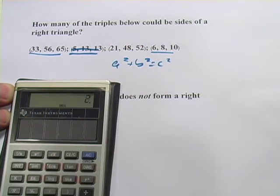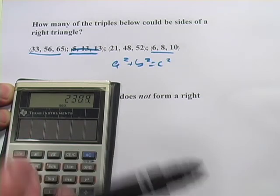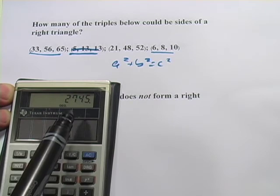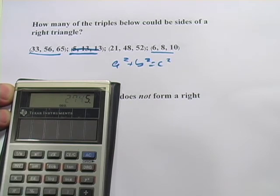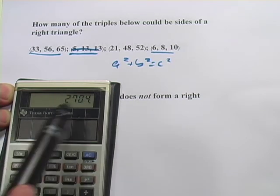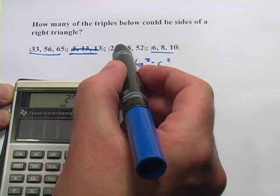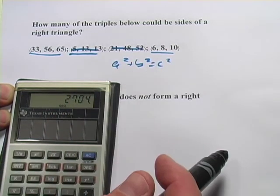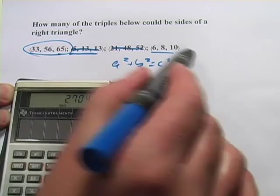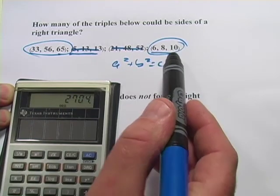Let's try this next one, 21, 48, and 52. 21 squared plus 48 squared is 2,745. And what's 52 squared? 2,704. So those are not equal. So this one's not a right triangle. So the answer here, how many of these could be right triangles? It's 2.